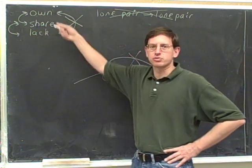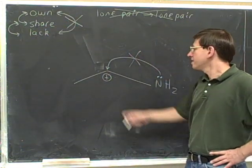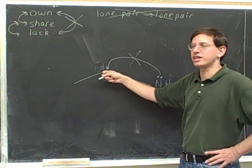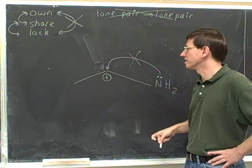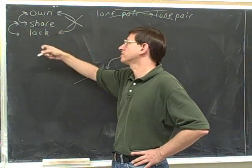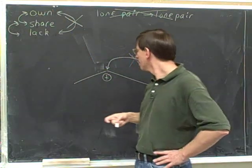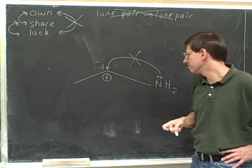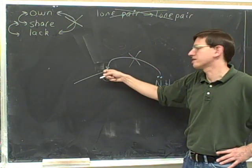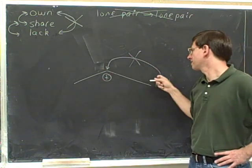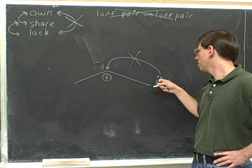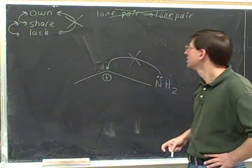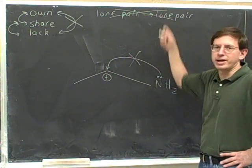You can see why if you think about these rules: this carbon currently is completely lacking any relationship with this pair of electrons. It can't go from completely lacking any relationship to owning the lone pair — that's not an allowed transition. This atom would go from lacking the lone pair to owning it, and the other atom would go from owning the lone pair to lacking it, which is also a forbidden transition. So it should be clear that we cannot go from a lone pair to another lone pair.